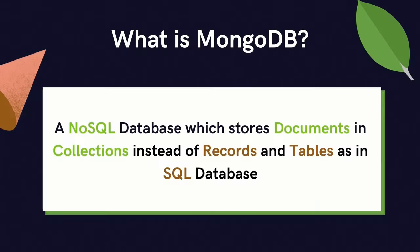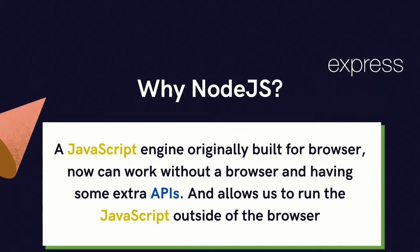MongoDB is a NoSQL database that stores documents in collections instead of records as in SQL databases. If you're coming from a SQL background, you can think of a document as equivalent to a record, and a collection as equivalent to a table.